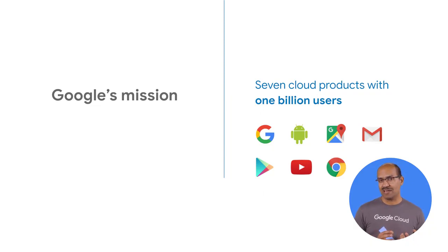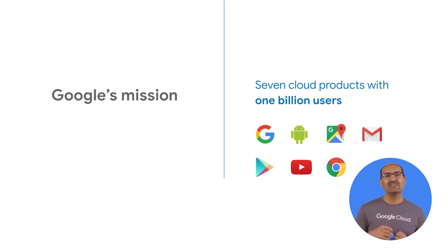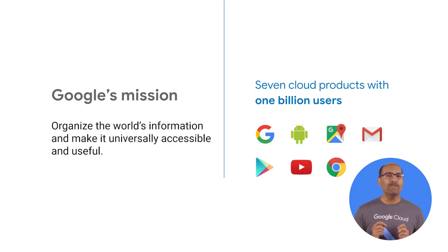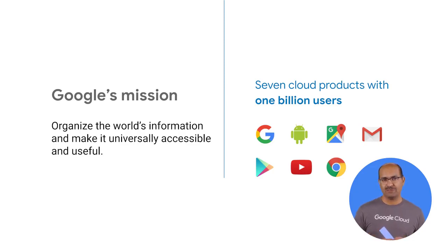Google Cloud's infrastructure is now available to your users — the end users served by Google Cloud customers such as Home Depot and Spotify, Twitter and New York Times, Colgate Palmolive, and Gojek. Let's look at the building blocks behind Google's big data infrastructure and how you can leverage it with Google Cloud.